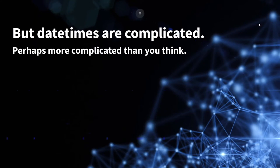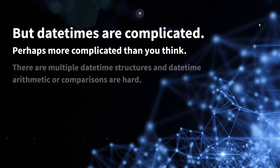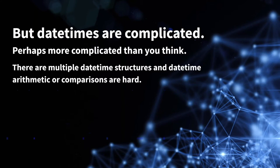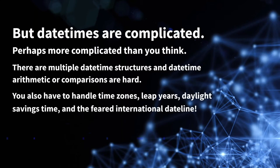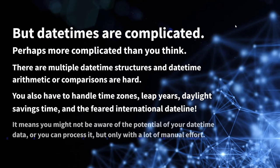Date times can be very complicated. There are multiple structures — every format seems to have its own structure. And once you start looking at date-time arithmetic, that's difficult: what's one date minus the other date, comparing dates, how do you handle time zones, leap years, and the international date line? When you've got time data all over the world, that's when it becomes more complicated. Even if you are aware of the potential of your date-time data, you might be processing it with a lot of manual effort. So we are here to solve that problem.